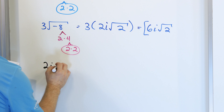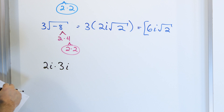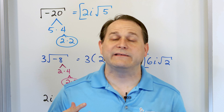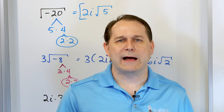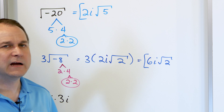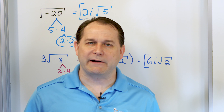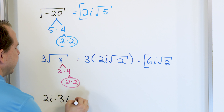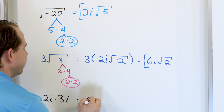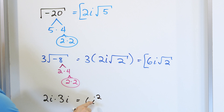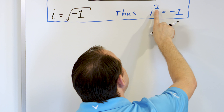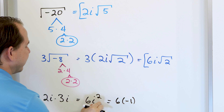What if we have 3 times the square root of negative 8? We do a factor tree, ignoring the negative sign. 8 is 2 times 4, and 4 is 2 times 2, so we have a pair of 2's. A single 2 comes out, a 2 is left over under the radical, and because we're taking the square root of a negative, that comes out as i written in front of the radical. We have 3 times 2i times the square root of 2. Multiplying gives us 6i times the square root of 2 — the final answer.